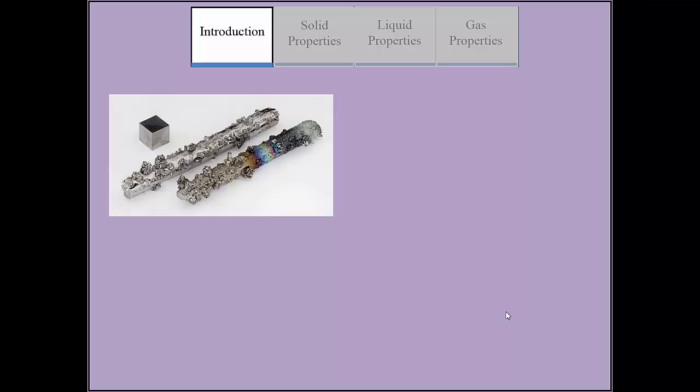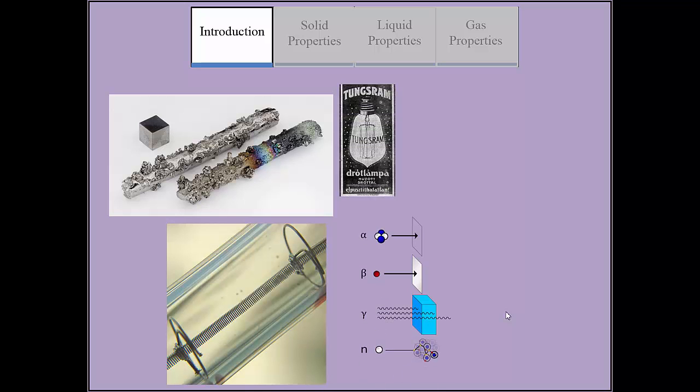Because they retain strength at high temperatures and have a high melting point, tungsten alloys are used in incandescent light bulbs, x-ray tubes, and as electrodes in radiation shielding.